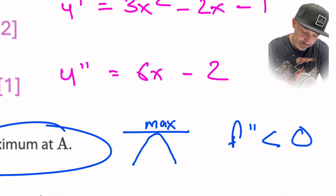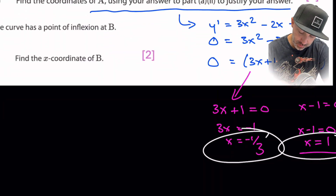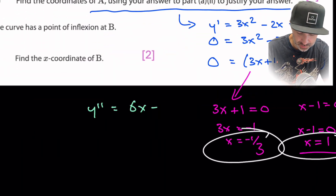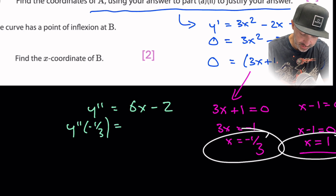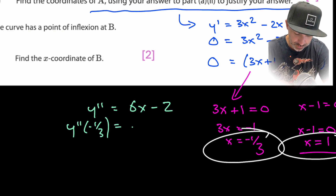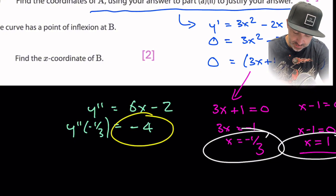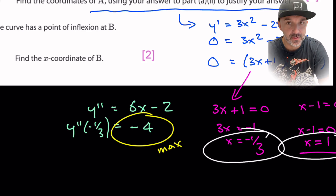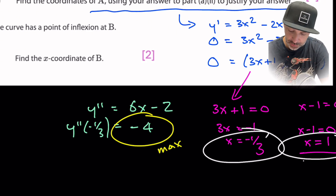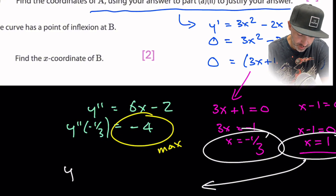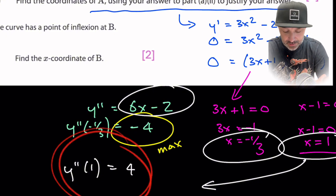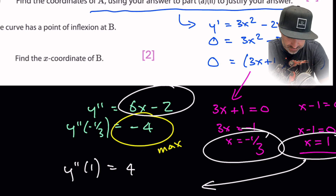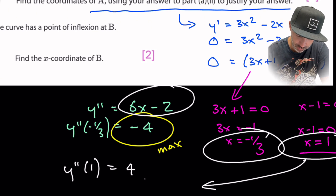We now substitute both values into the second derivative y'' = 6x - 2 to identify the maximum. At x = -1/3: 6(-1/3) - 2 = -2 - 2 = -4, which is less than zero — so this is the local maximum. At x = 1: 6(1) - 2 = 4, which is positive — so that is a local minimum.